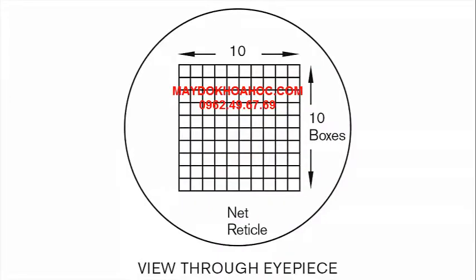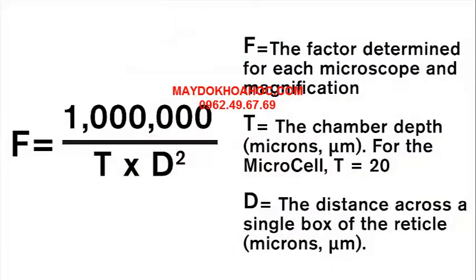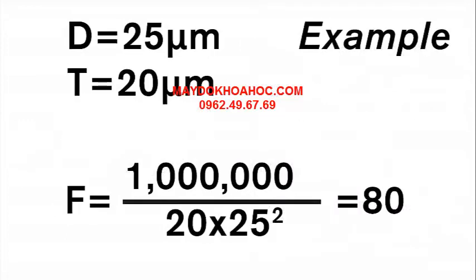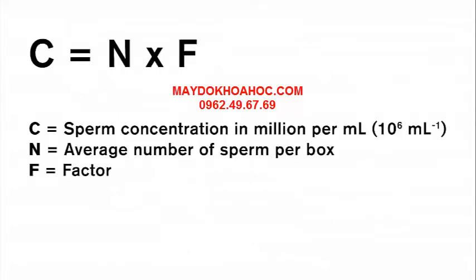This is your view through the eyepiece. Here is the formula for calculating the F factor. Here is an example of how to determine the F factor: D is measured to be 25 microns and T, the change in depth, is always 20 microns. Then F equals 80 for that specific magnification.